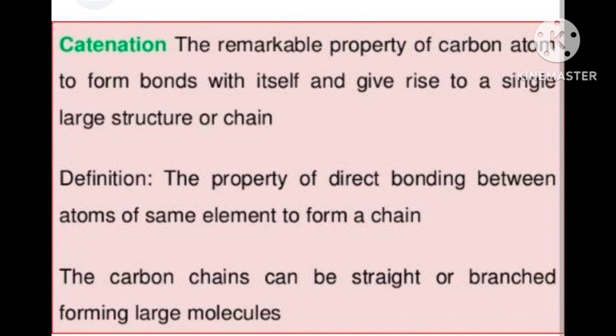Carbon chains can be straight or branched, forming large numbers of molecules. Straight means normal butane, normal pentane, normal hexane. Branched means isobutane, isopentane, isohexane, etc. It is also possible that carbon is arranged in a circular manner to form closed chain compounds like cyclopropane, cyclobutane, and cyclohexane.